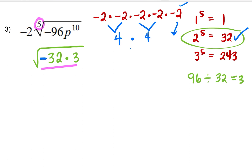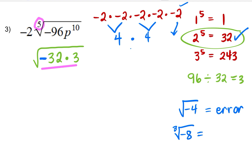Because if we take the square root of negative four, this will give us an error in the calculator — meaning it's not possible, it does not exist. But if we take the cube root of negative eight, the answer is negative two, because negative two times negative two times negative two equals negative eight. Hopefully that makes sense.